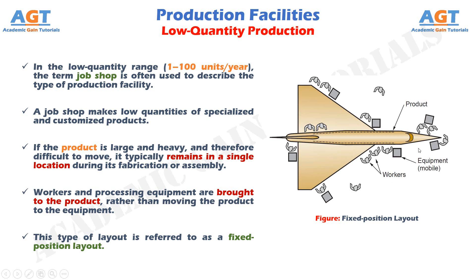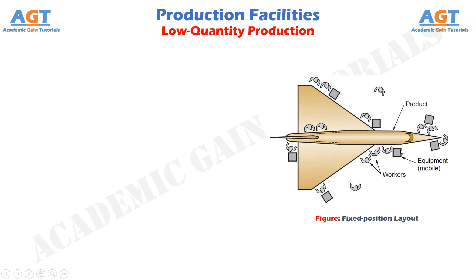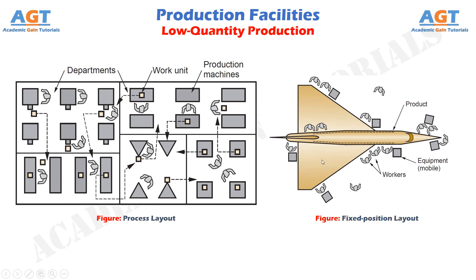In actual practice, these items are usually built in large modules at single locations, and then the completed modules are brought together for final assembly using large-capacity cranes. The individual components of these large products are often made in factories where the equipment is arranged according to function or type. This arrangement is called a process layout — the lathes are in one department, the milling machines are in another department, and so on, as shown in this figure.